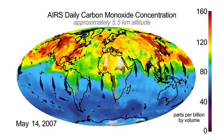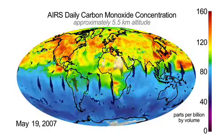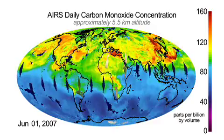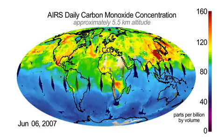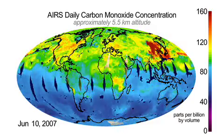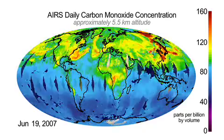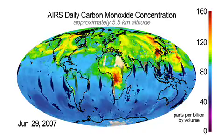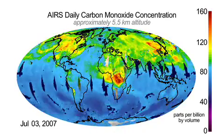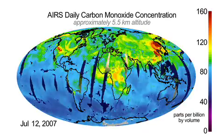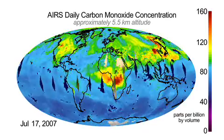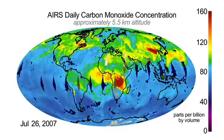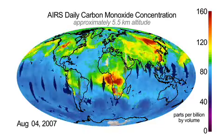Here we show the concentrations of carbon monoxide approximately 5.5 km above the surface, in parts per billion by volume. This is the region of the atmosphere where air is most sensitive to carbon monoxide. It also happens to be a location favorable to long-range transport of carbon monoxide and other material.